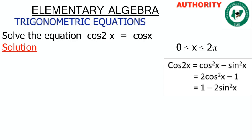We have previously treated trigonometric identities, where we dealt with formulas on trigonometry. Now there is one formula I will refer you to — that is the multiple angle formula. This formula says cos 2a is equal to cos²x minus sin²x.